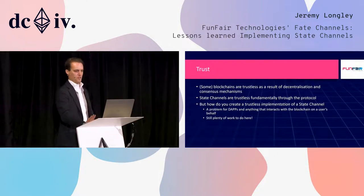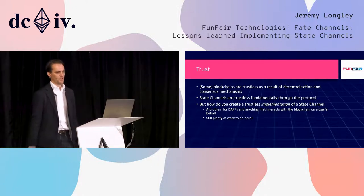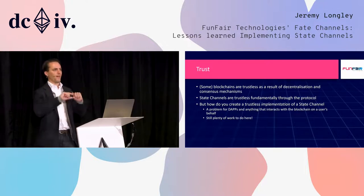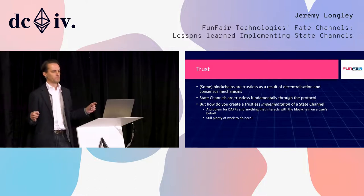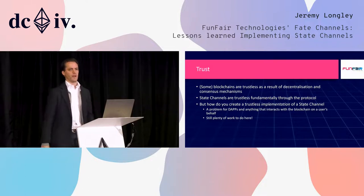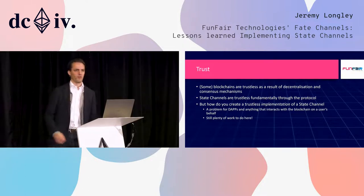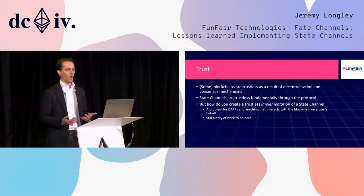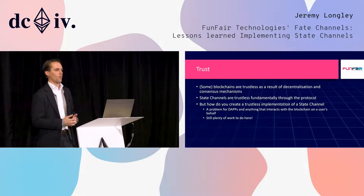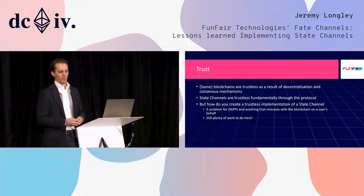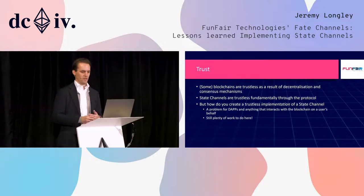Some blockchains are trustless as a result of decentralisation and consensus mechanisms. State channels are fundamentally trustless through the protocol. But how do you create a trustless implementation of a state channel? It's all very well saying this stuff is secure, but who wrote the TypeScript code running in your browser? This is a problem that dApps in general will face, and we've got plenty of work to do to prevent the various attack vectors.